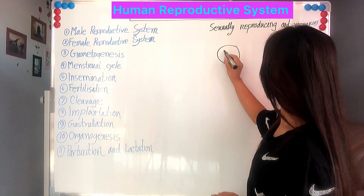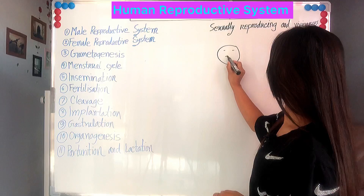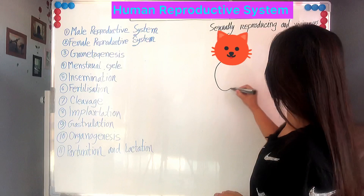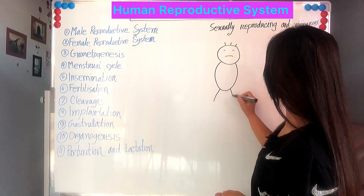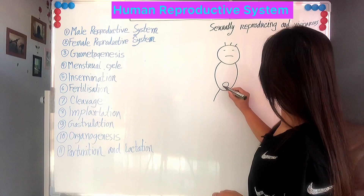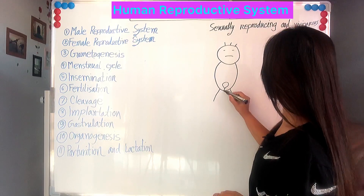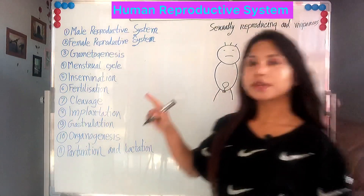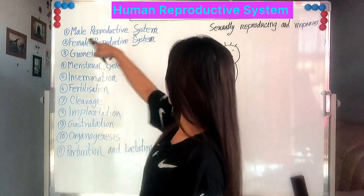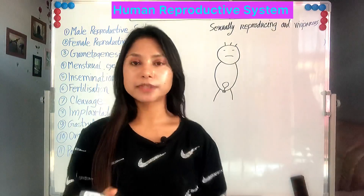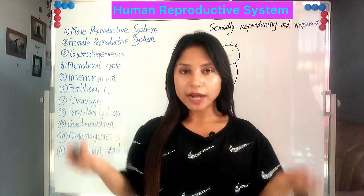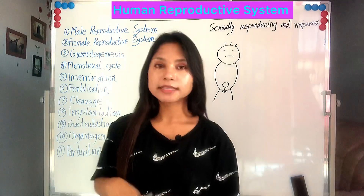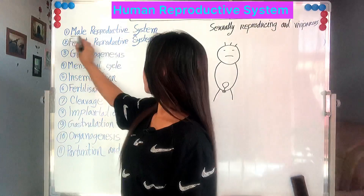Suppose this is a male — with scrotum and penis. In the male reproductive system, we will learn the primary sex organs of male, then the accessory organs of male, then the secondary sex organs of male.